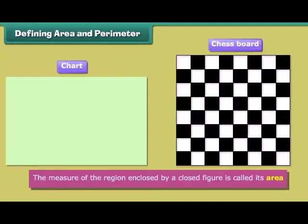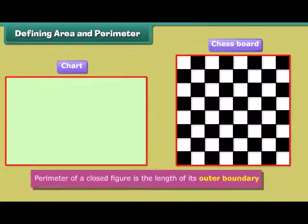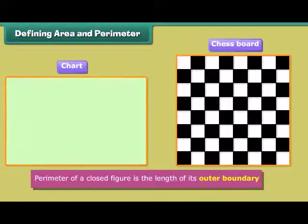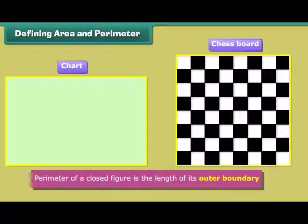The measure of the region enclosed by a closed figure is called its area. The perimeter of a closed figure is the length of its outer boundary. Let us now find the ways of calculating area and perimeter of rectangles and squares.